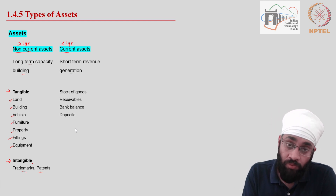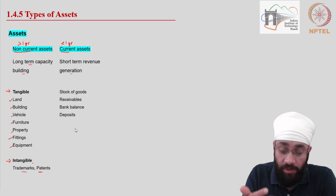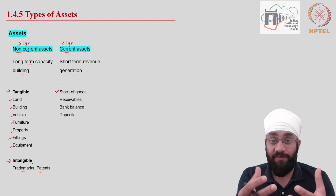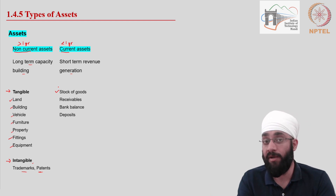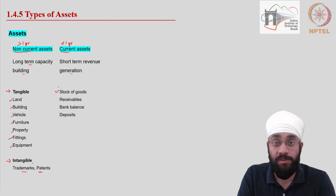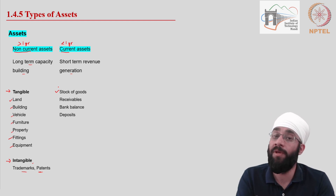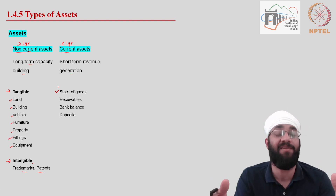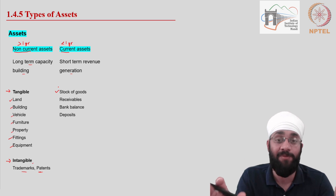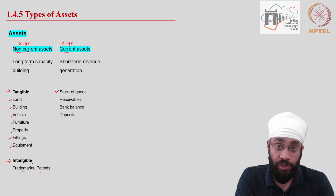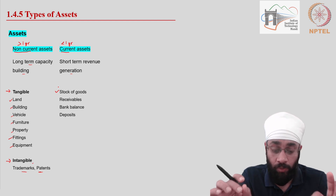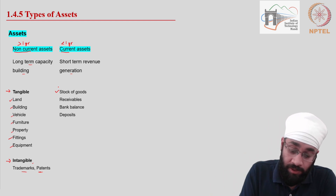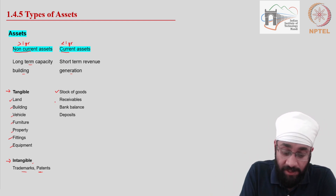For short-term assets — current assets — these are the things which help you generate revenue in the short run, a temporary capacity. For example, stock of goods: if you have the stock of goods that you deal in, you will be able to sell it and make money. The intention is that you want to produce and sell the goods within the year as fast as possible. So stock of goods gives you temporary capacity to generate revenue — it's a current asset.